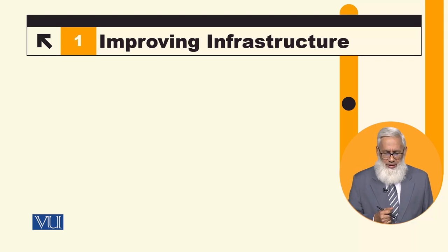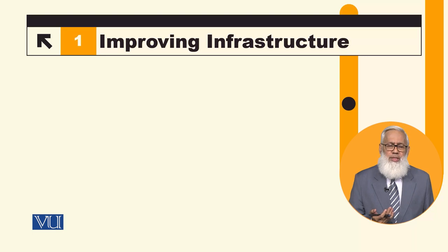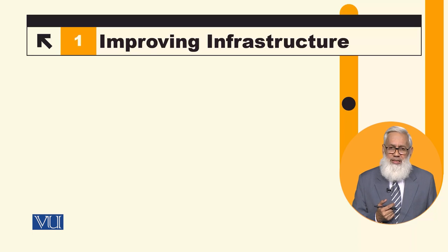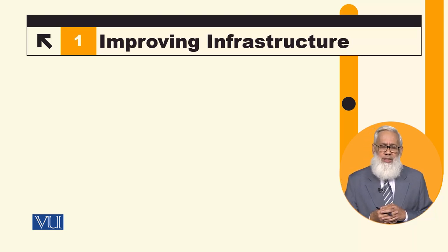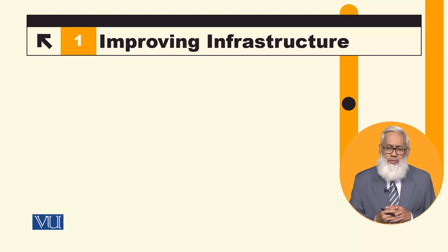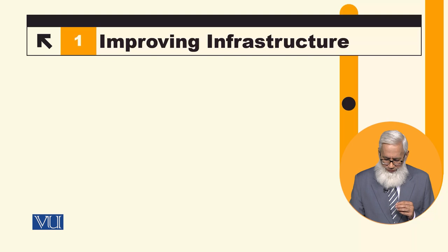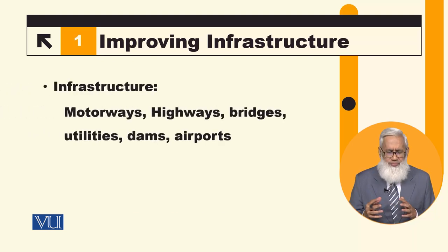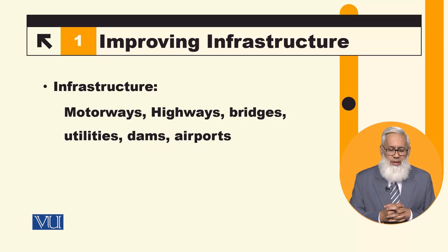Today we will talk about how government productivity growth can improve long-run growth and long-run living standards. For the Solow growth model, if we want to increase the growth rate, then the only source of productivity growth is Public Capital — that we have motorways, highways, bridges, utilities, dams, and airports.